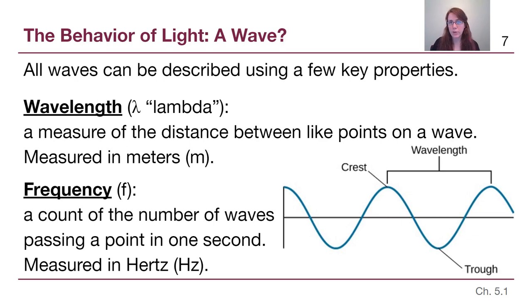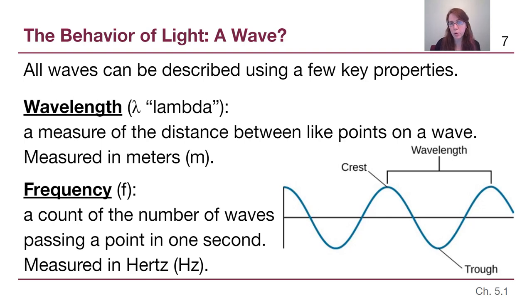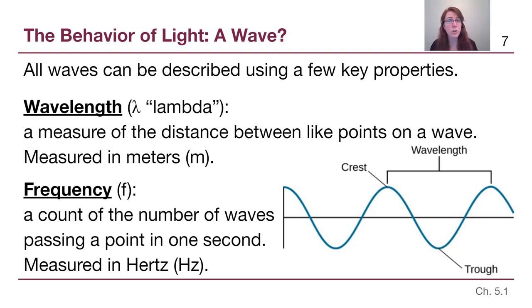In order to be a wave, there are certain properties we can use to describe any wave — whether it's light waves, sound waves, waves on a lake surface, or waves along a jump rope. The first really important one is wavelength, often using the symbol lambda, a Greek letter, instead of writing out the word. Wavelength is a measure of the distance between like points on a wave — from one crest to another crest, or from one trough to the next trough. It's measured in meters, although we'll often see nanometers or other variants.